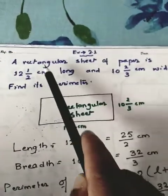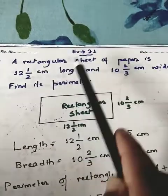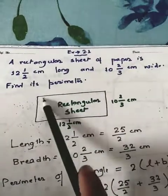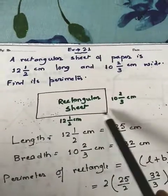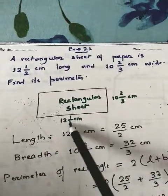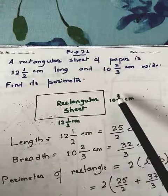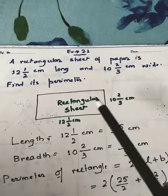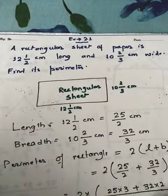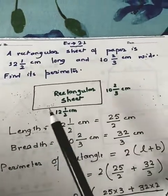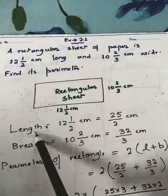Now you have to find its perimeter. The shape of the paper is rectangular — I've drawn one rectangular shape. The length is given as 12 and 1/2 centimeter and the width is 10 and 2/3 centimeter. We know that the perimeter of a rectangle is 2 × (length + breadth). This is the formula.